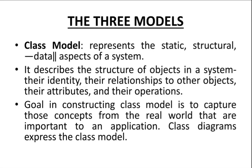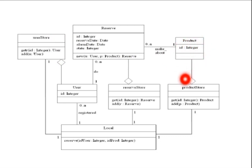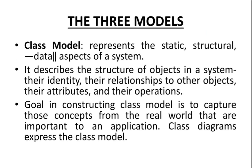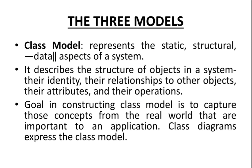So class model represents these class details. These classes contain different objects — for example, User Store can contain different users, and Product class can contain different products. The number of products are objects of the Product class. These details of objects and classes are represented by the class model. Class model represents only the static behavior — it only gives details about the classes, not the movement details, such as how data moves from User Store to Reserve to Product. Those details are not given by the class model; they are given by the use case and interaction models.